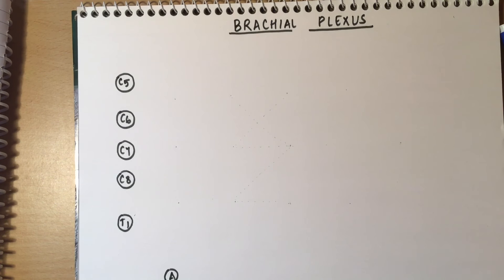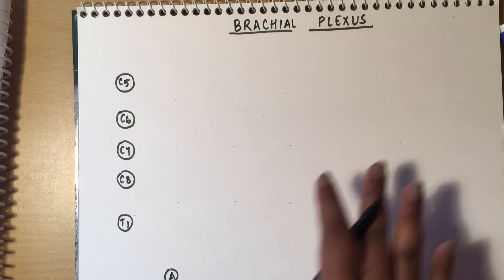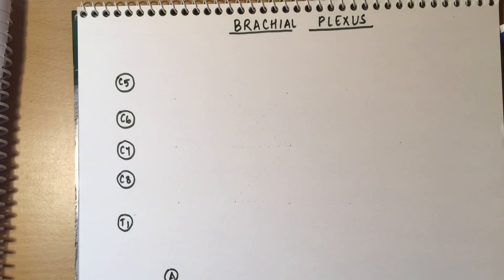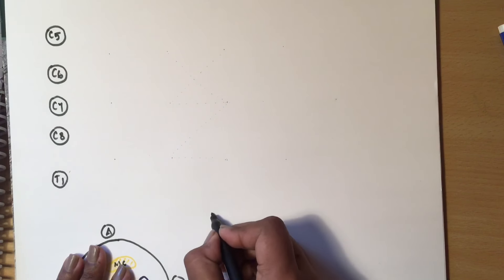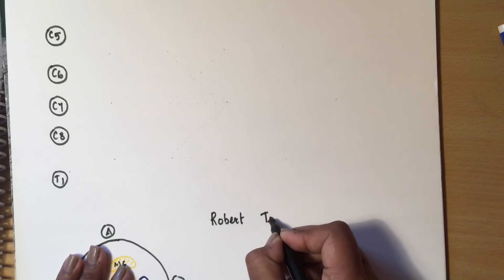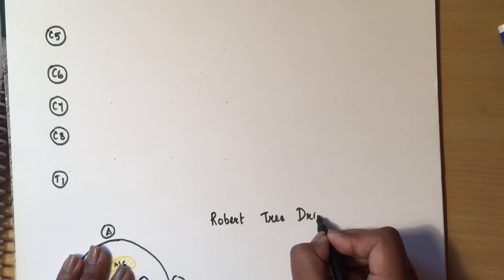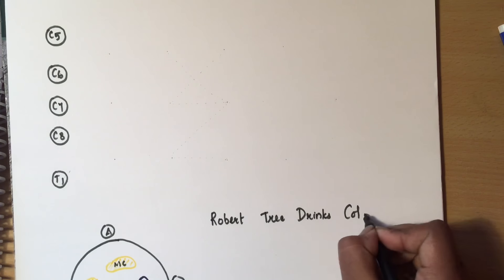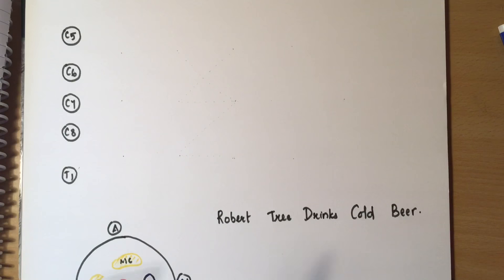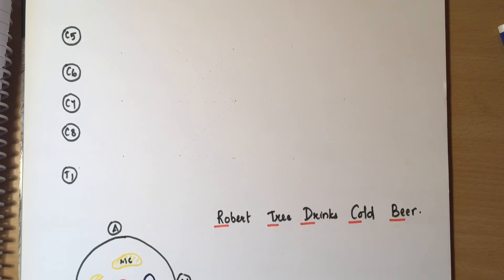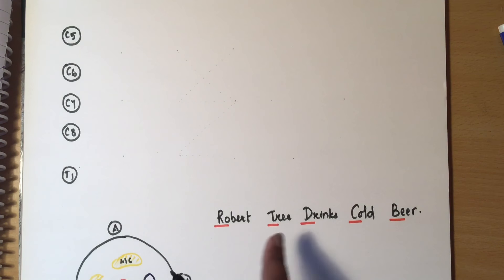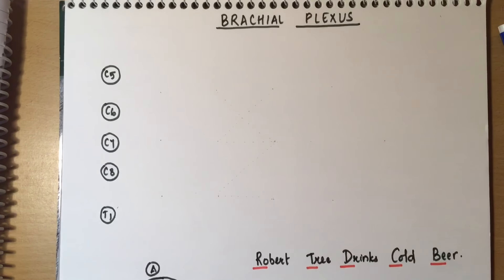Sometimes it's confusing to remember the order of the brachial plexus — roots, trunks, divisions, cords, branches — so there's a small mnemonic for that: 'Robert Taylor Drinks Cold Beer.' R for roots, T for trunks, D for divisions, C for cords, and B for branches. This is a very simple mnemonic to remember the sequence.